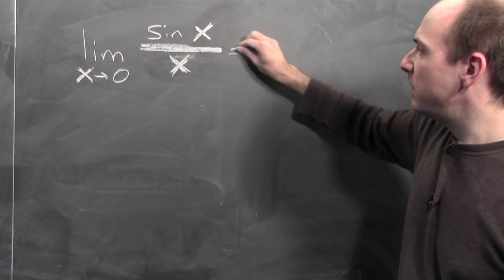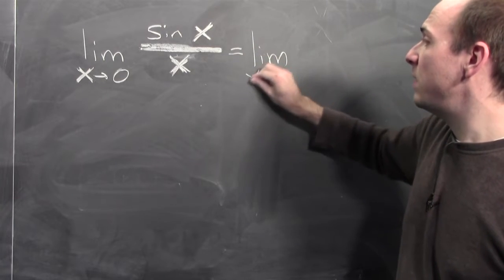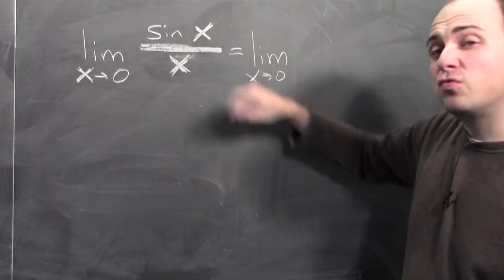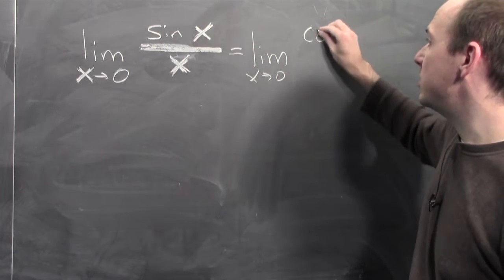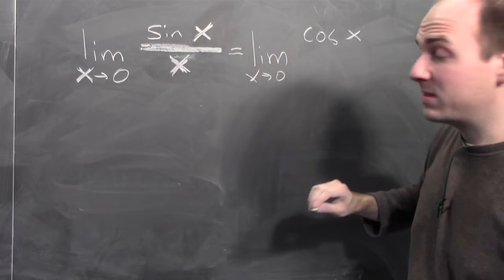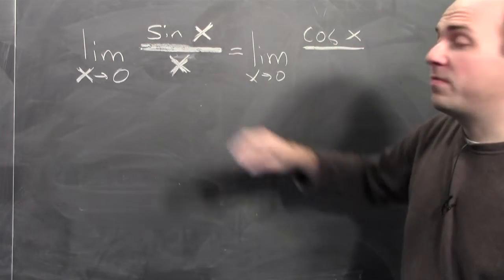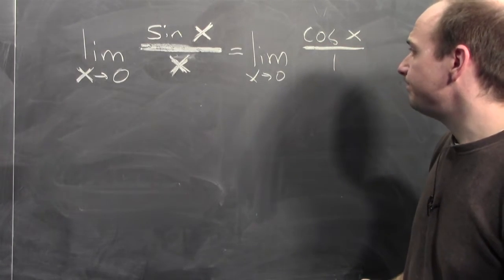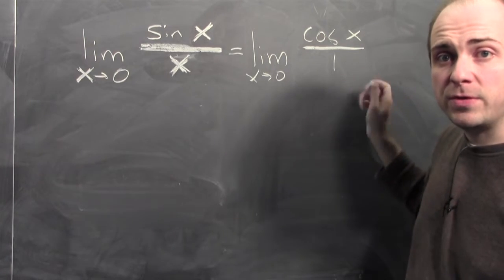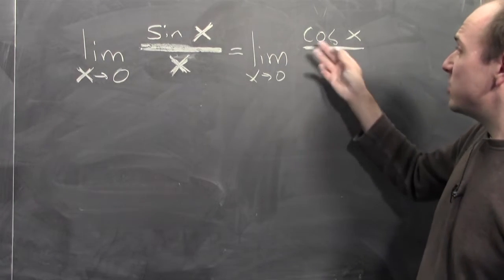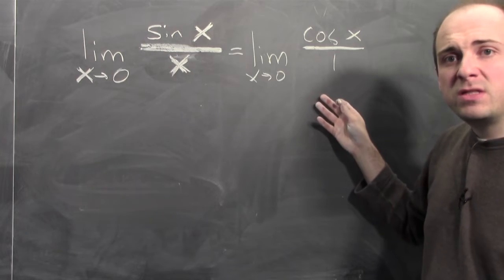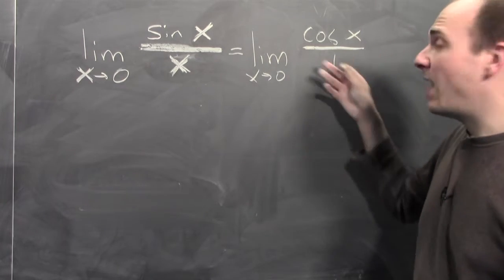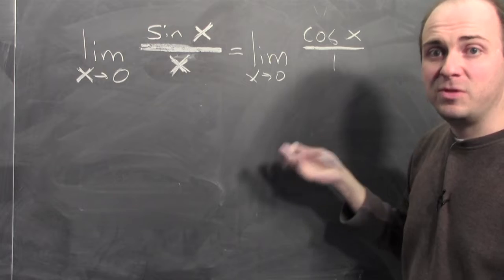L'Hopital tells us that this limit is equal to the limit as x approaches zero of the derivative of the numerator, which is cosine x, over the derivative of the denominator, which is one. This limit is quite a bit easier to do — it's really just the limit of cosine x as x approaches zero. Cosine's continuous, so this is just the value of cosine at zero, which is one.